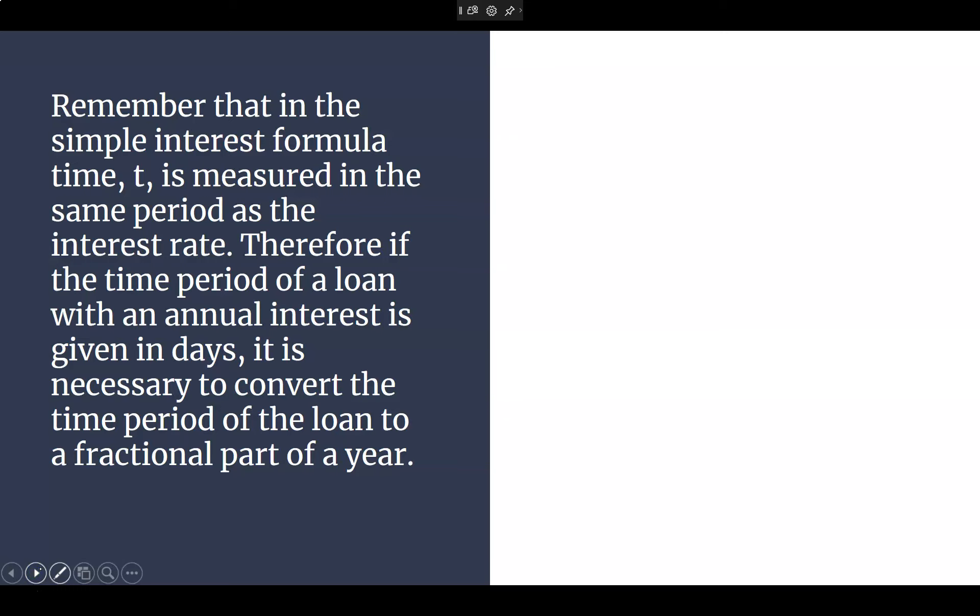Moving on. So remember, the simple interest formula time is measured as the same time period as the interest rate. So there are 52 weeks in a year. There's 12 months in a year, right? Quarterly means every four months is what that would be. Semi-annually is what? Twice a year.